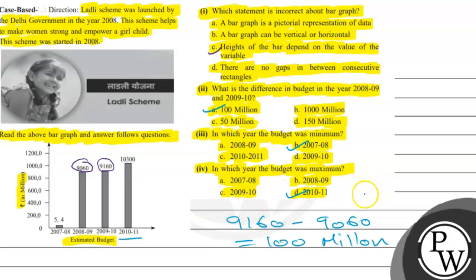So the final answers are: for part one, Option C is correct; for part two, Option A is correct; for part three, Option B is correct; and for part four, Option B is correct. I hope you understood it well. All the best, thank you.